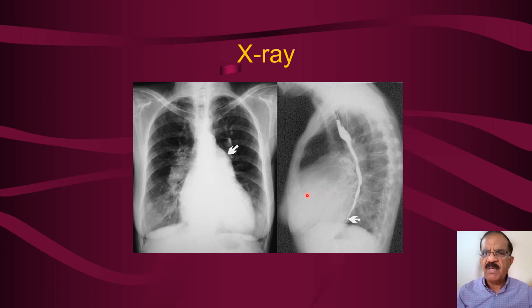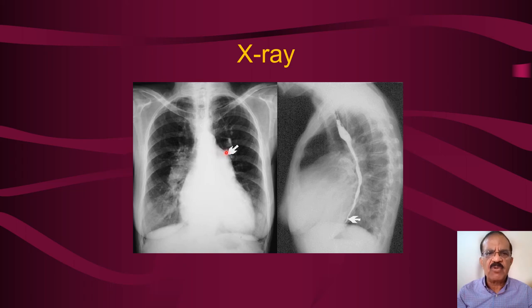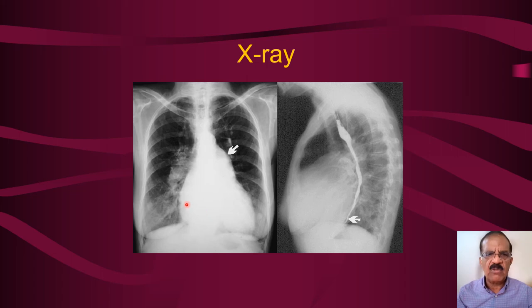On the chest X-ray, this is the aortic knuckle and this is the left ventricle. Normally the left heart border between the aortic knuckle and the left ventricle is concave. In mitral stenosis, because the left atrium and pulmonary artery are dilated, this concavity first becomes straight and then becomes convex — this convexity indicates left atrial and pulmonary artery dilatation, and this is what is called mitralization. There may also be some pulmonary congestion and cardiomegaly due to right ventricular dilatation.